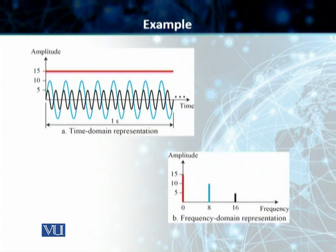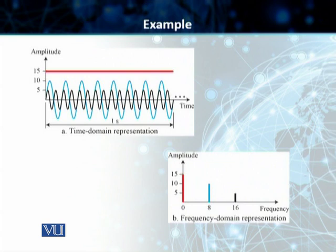You can see the complex time domain plot we have here. If we convert this time domain plot into the frequency domain plot, we come up with three spikes. The first spike represents a frequency of 0 with an amplitude of 15, the second has a frequency of 8 with an amplitude of 10, and the third has a frequency of 16 with an amplitude of 5. Representing sine waves in a frequency domain plot is much simpler and conveys the same information present in a time domain plot.